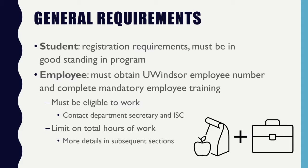It's important to remember that you are both a student and an employee. As such, you must be registered as a student that term and be considered in good standing by your program. Regarding employee requirements, you need to obtain your employee number from Human Resources — typically a five-digit number. You also need to complete any mandatory employee training. A link will be shared later in the workshop where you can find out how to complete your mandatory training.